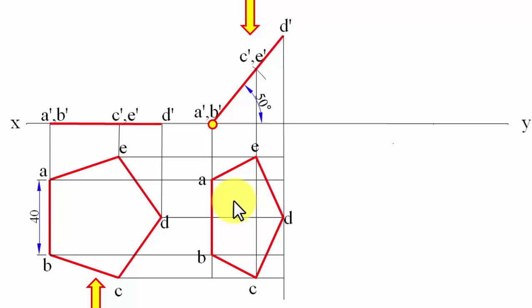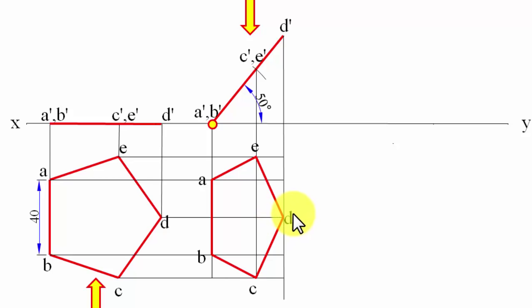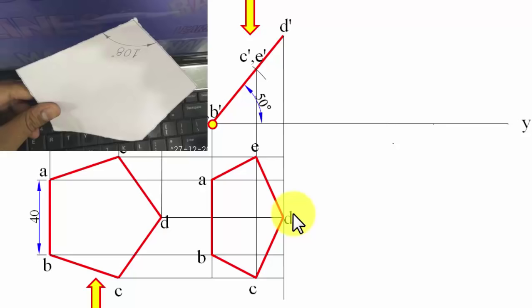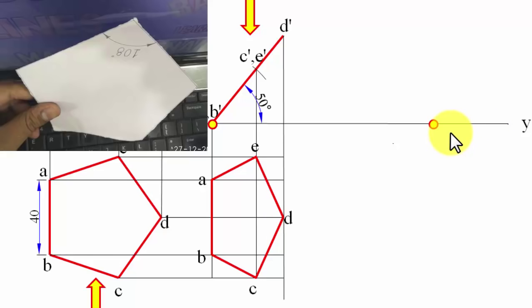Step number two is done. Condition number three is extremely important and slightly confusing. It says that edge AB, which is already in contact with the horizontal plane, should make an angle of 15 degrees with the VP. At the same time, corner D must be in absolute contact with the vertical plane. We make sure that the top view of corner D lies on the XY line — if D's top view is on the XY line, then corner D is in the vertical plane.